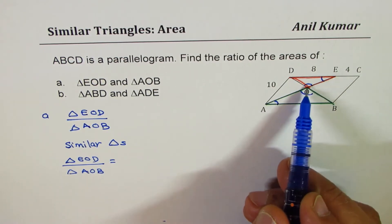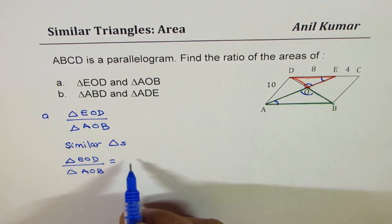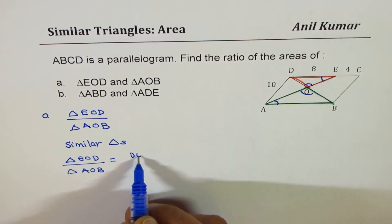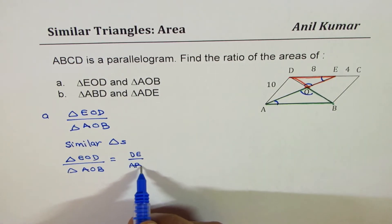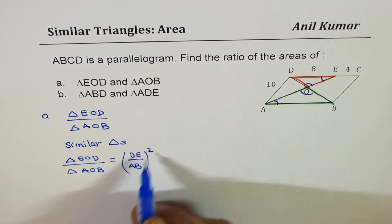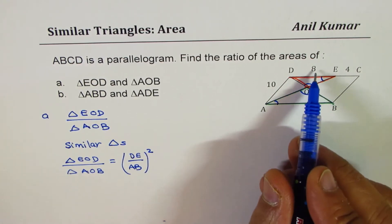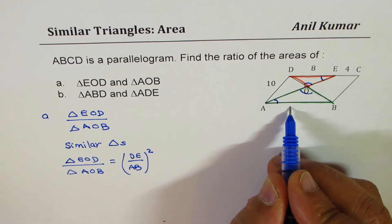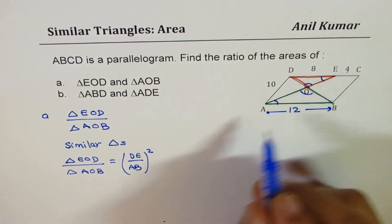So EOD is the smaller one which is 8. So let me say it is DE over AB square, correct? Now if you look at this diagram, since they are parallelogram, AB should be 8 plus 4 which is 12, right, so this should be 12, 8 plus 4.